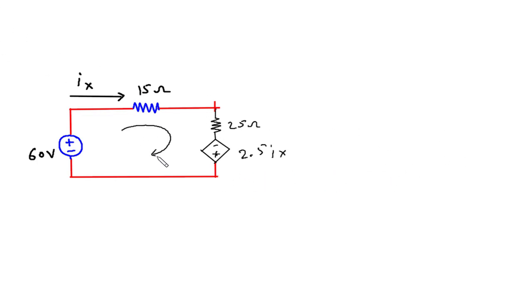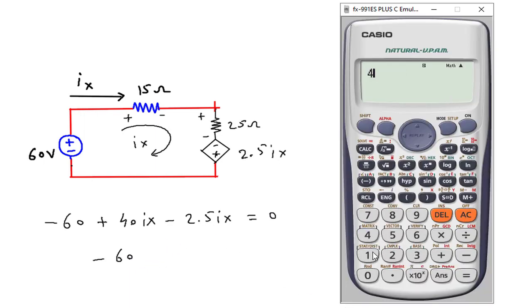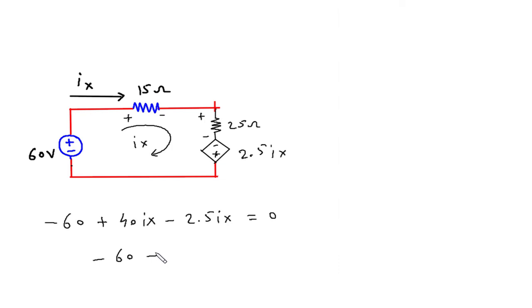Now here we can apply KVL. This is current Ix. So let's say we will start from here. This will be minus 60. Minus 60 this will be plus. This will be minus. This will be plus. This will be minus. So minus 60, then this will be minus. This will be minus 60.